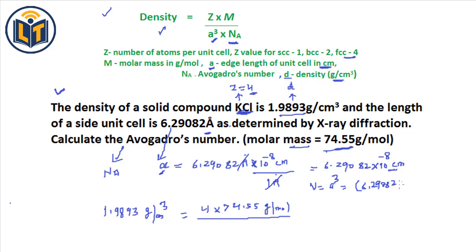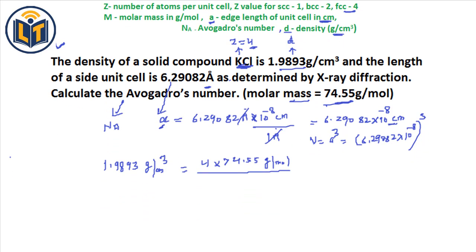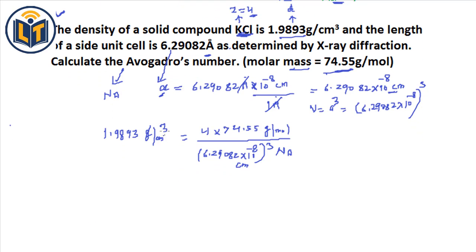The volume a-cubed is calculated as 6.29082 times 10 to the power of minus 8, raised to the power of 3. This is the volume of the unit cell in centimeters cubed. Substituting this in, the units — grams and centimeters cubed — will cancel out during the calculation.